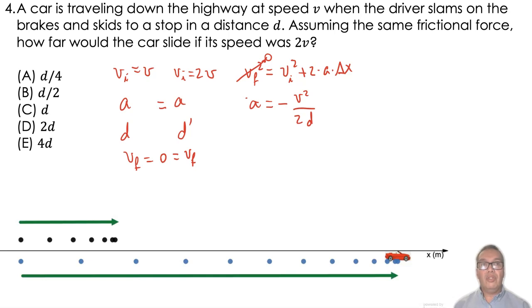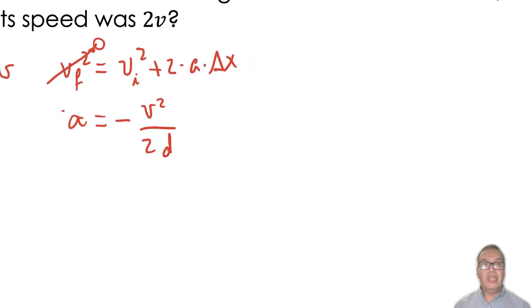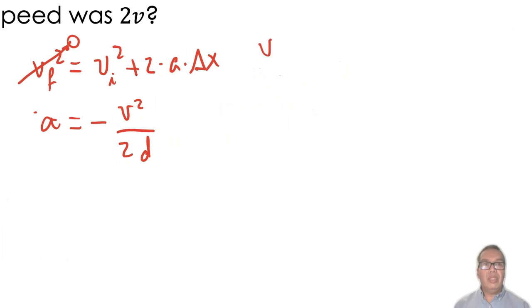If this is the acceleration and we assume it to be constant by starting with twice the velocity, then we should have that the final velocity squared should be equal to 2b squared plus 2 times negative b squared over 2d times d prime. Taking the final velocity as zero,